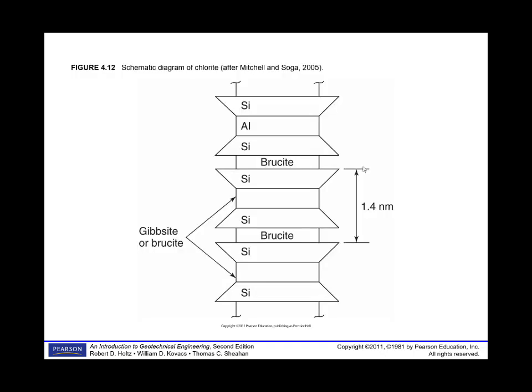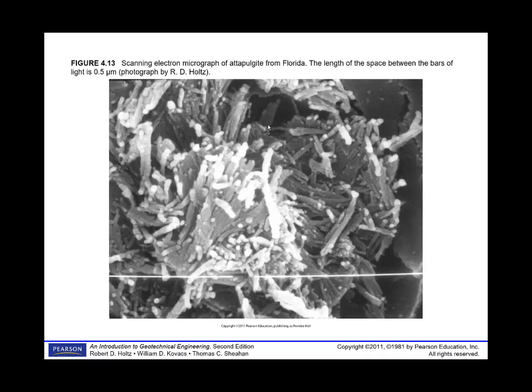Illite has less swell potential due to those potassium cations. Chlorite is technically a clay mineral but doesn't really behave like one. Instead of potassium, another sheet — brucite or gibbsite — bonds the clay minerals together into a very blocky, bulky structure. A scanning electron micrograph of attapulgite from Florida, with a 0.5-micron scale bar, shows minerals that are somewhat curled up.